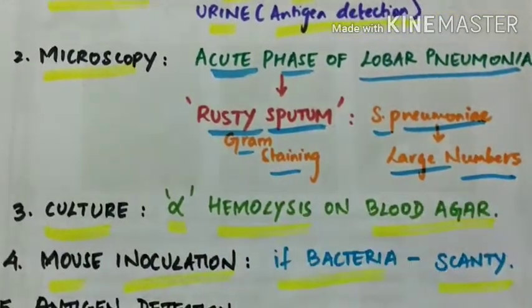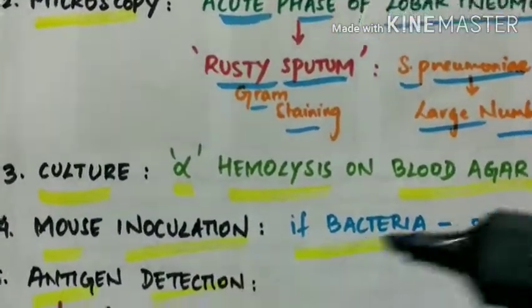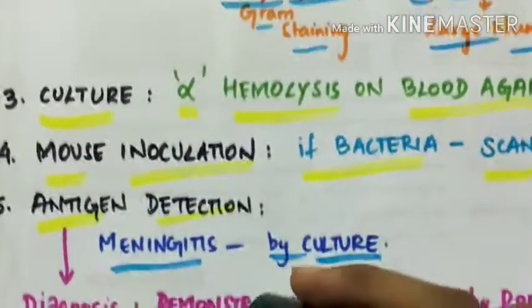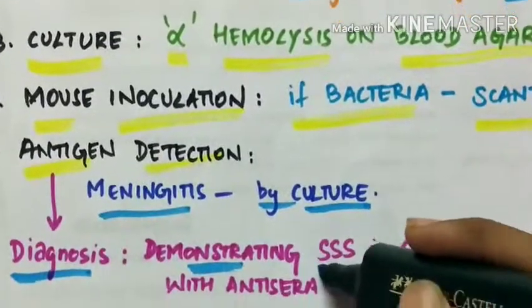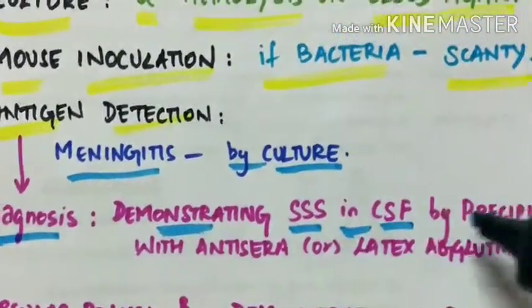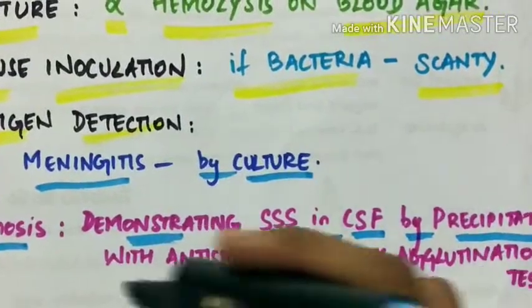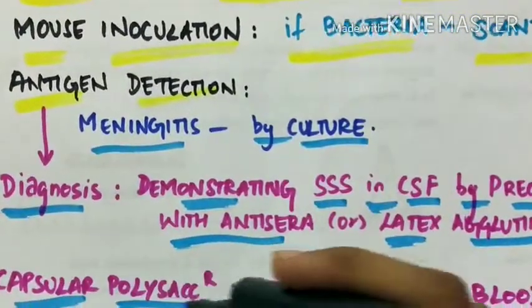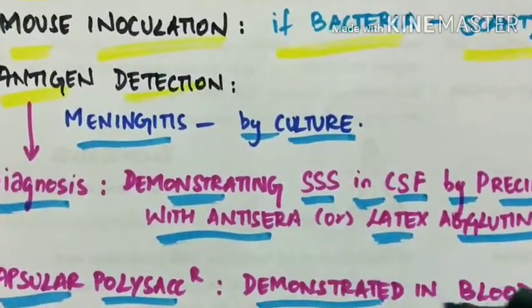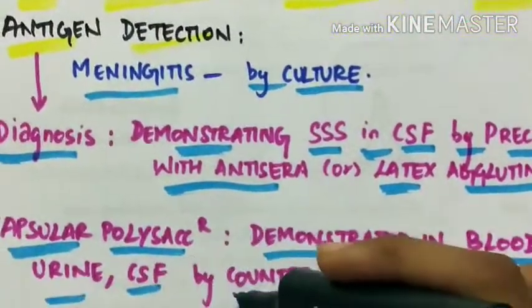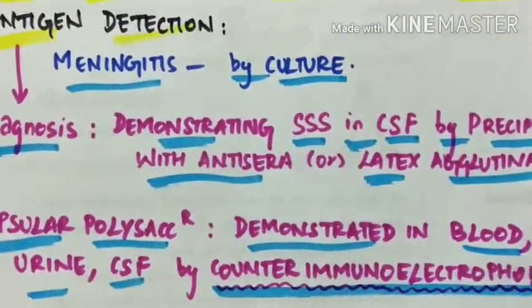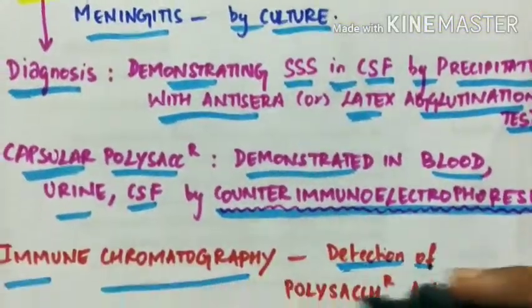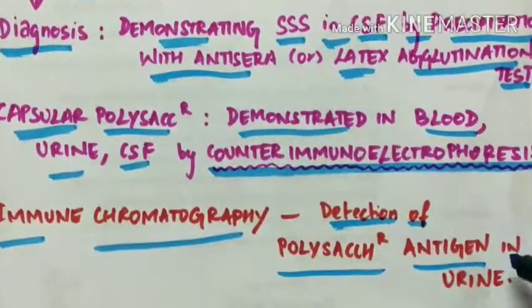Antigen detection. In case of meningitis, the antigen detection is done by demonstrating specific soluble substance in cerebrospinal fluid by precipitation with antisera or latex agglutination test. Capsular polysaccharide is demonstrated in blood, urine, CSF by counter immunoelectrophoresis. Immunochromatography. This is done for detection of polysaccharide antigen in urine.